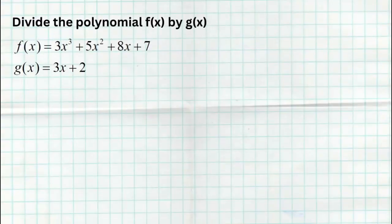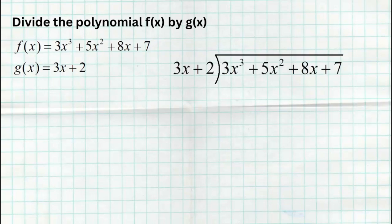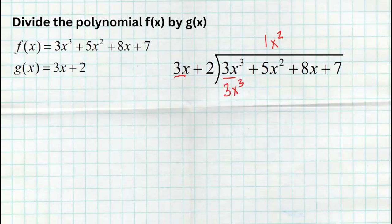In the first example, we're asked to divide f(x) by g(x) using long division. The dividend 3x³ + 5x² + 8x + 7 goes inside the bar, and the divisor 3x + 2 goes on the outside. We start by asking: what do I multiply 3x by to get 3x³? We need 1x². So we put x² in the x² column, then multiply: 3x · x² = 3x³ and 2 · x² = 2x². The most important step that many students miss is to subtract.